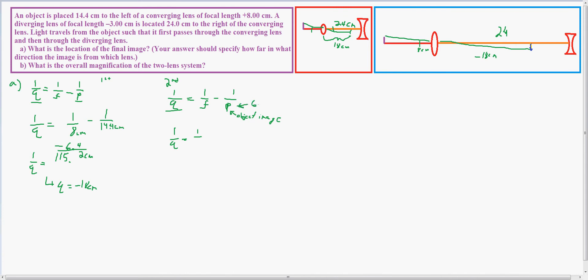The focal point is negative 3 centimeters, so we have 1 over negative 3 centimeters minus 1 over 6 centimeters, which ends up giving us 1 over Q equals negative 9 over 18 centimeters, which means Q equals negative 2 centimeters.